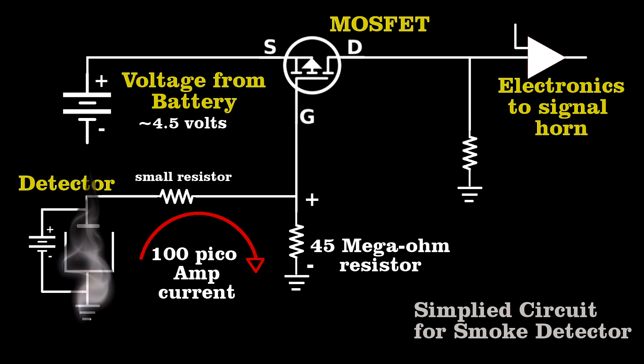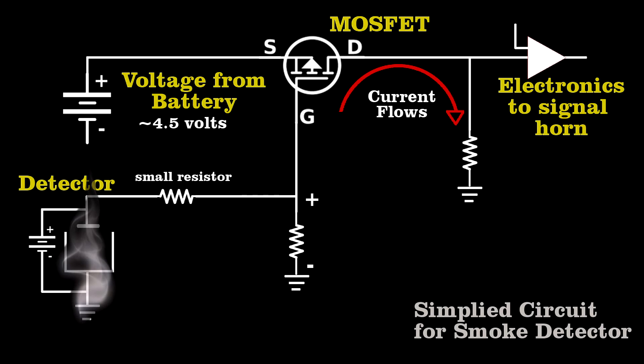If smoke enters the chamber, the tiny current stops. The MOSFET allows current to flow in this section of the circuit, which triggers the horn.